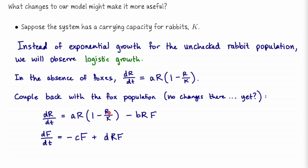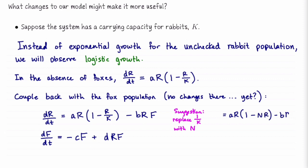I'm going to make a suggestion about what to do with this 1/k term. The way this equation is set up, k must be positive — we can't set it to zero because it lives in the denominator. What I suggest is to take this 1/k in the dr/dt line and replace 1/k with a new parameter n. When we do that, the first equation becomes ar times 1 minus nr, minus brf.